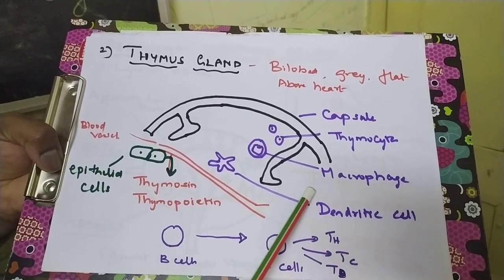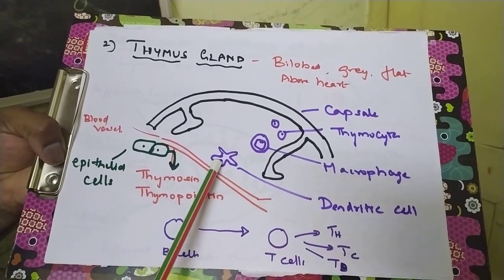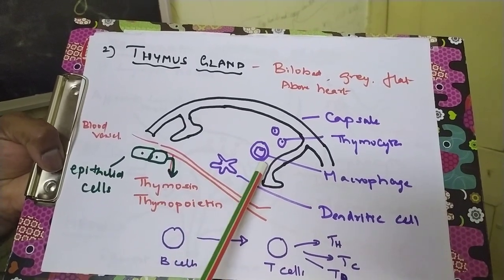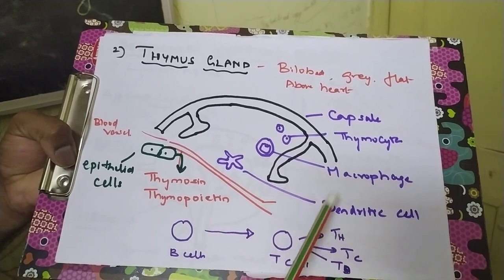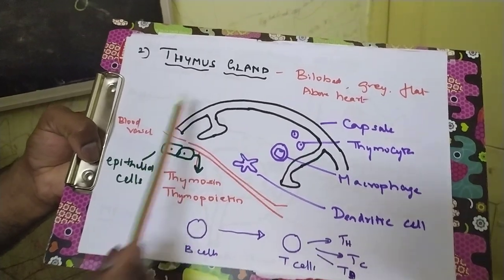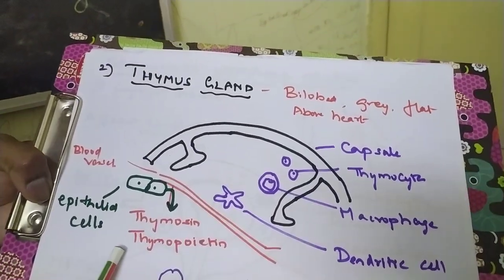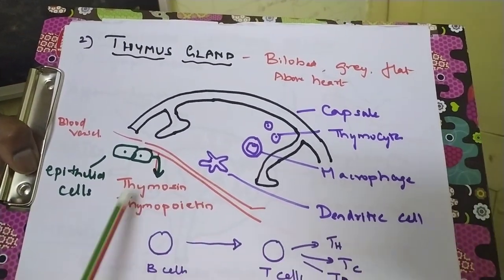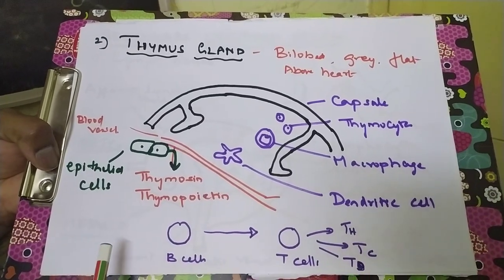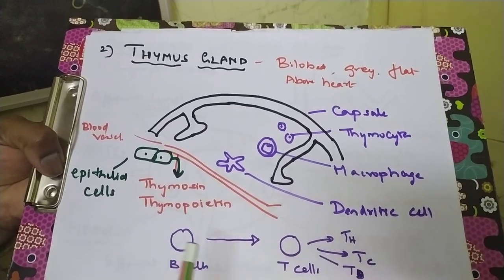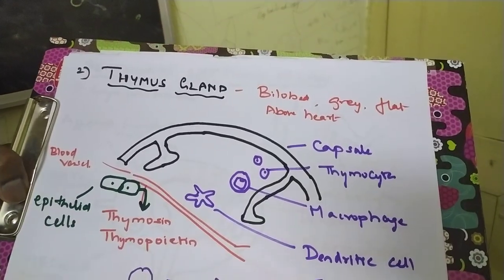The thymus gland also has dendritic cells and macrophages, which protect the organ from any infection. That is the role of the thymus gland.